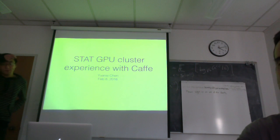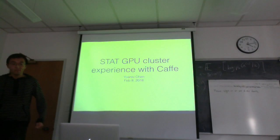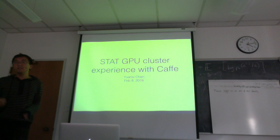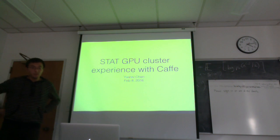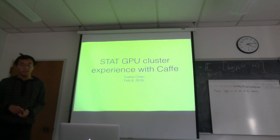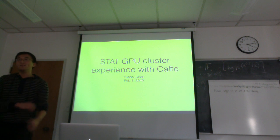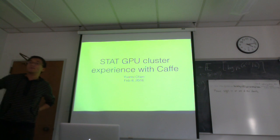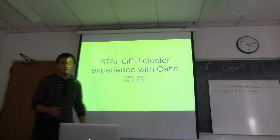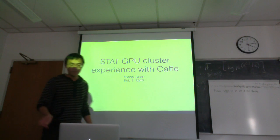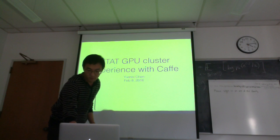I wanted to give some of our GPU experience with Caffe, a machine learning package for deep convolutional neural networks. We are just using these packages to deploy deep convolutional neural networks and are not really programming at the low level to accelerate the code. Basically, we don't touch the C++ code, but we have some tricks to make them work with our project.